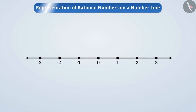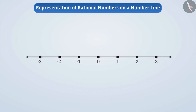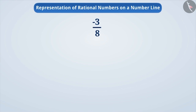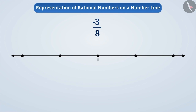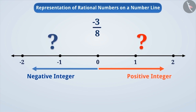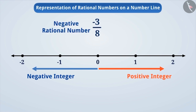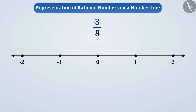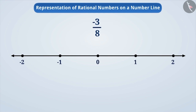Let us now see how rational numbers are represented on the number line. Suppose we have to represent minus 3 by 8 on the number line. First, we will draw a number line and mark it with a point 0. Positive integers are marked on the right side of 0 and negative integers are marked on the left side. Since minus 3 by 8 is a negative rational number, we will place it to the left of 0. Comparing the numerator and denominator without the sign, the numerator is smaller than the denominator — that is, the distance is less than 1 unit. So, the position of minus 3 by 8 will be between 0 and minus 1.